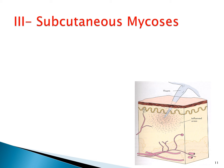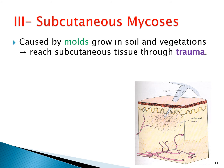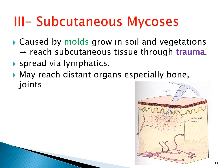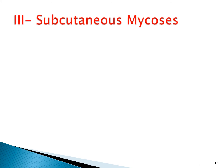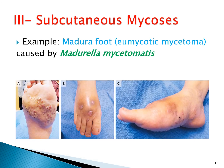The third form of mycosis is subcutaneous mycosis, caused by molds growing in the soil and vegetation. To reach the subcutaneous tissue, the fungus needs trauma to introduce spores into the subcutaneous tissue. It can spread by lymphatics and is more common in the non-industrialized world. An example is Madura foot, called eumycotic mycetoma, caused by Madurella mycetomatis.